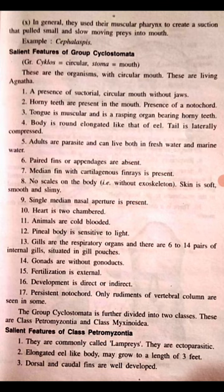The group Cyclostomata is further divided into two classes: Petromyzontia and Myxenoidia. Petromyzontia is commonly called lampreys. They are ectoparasites. Caudal fins are well-developed.